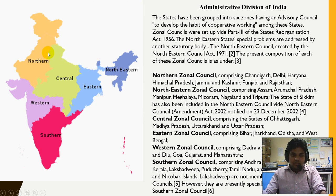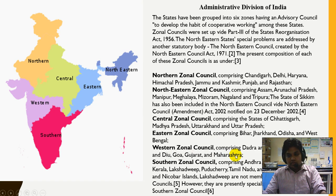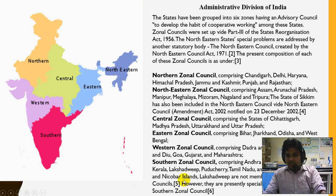The Central Zonal Council comprises Chhattisgarh, Madhya Pradesh, Uttarakhand, and Uttar Pradesh. The Eastern Zone includes Bihar, Jharkhand, Odisha, and West Bengal. The Western Zonal Council includes Goa, Gujarat, Maharashtra, and union territories Dadra & Nagar Haveli and Daman & Diu. The Southern Council includes Andhra Pradesh, Karnataka, Kerala, Puducherry, Tamil Nadu, Telangana, and Andaman & Nicobar Islands. Importantly, Lakshadweep is not a member of any zonal council.